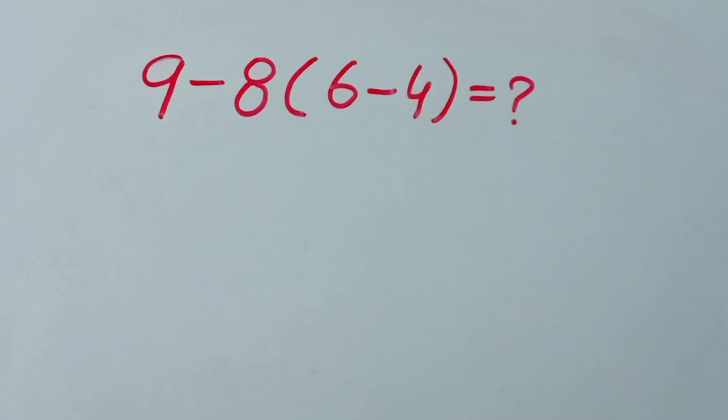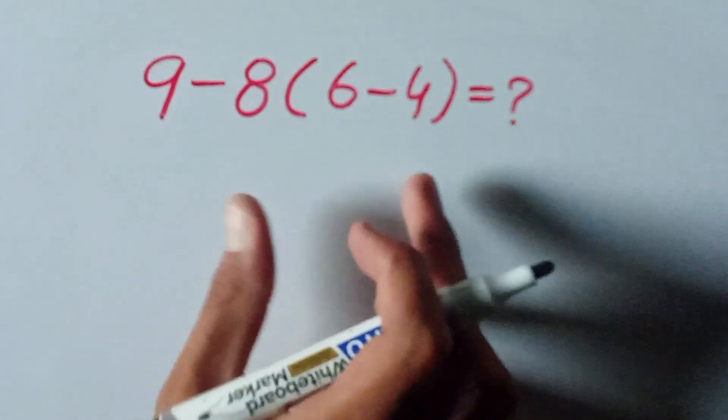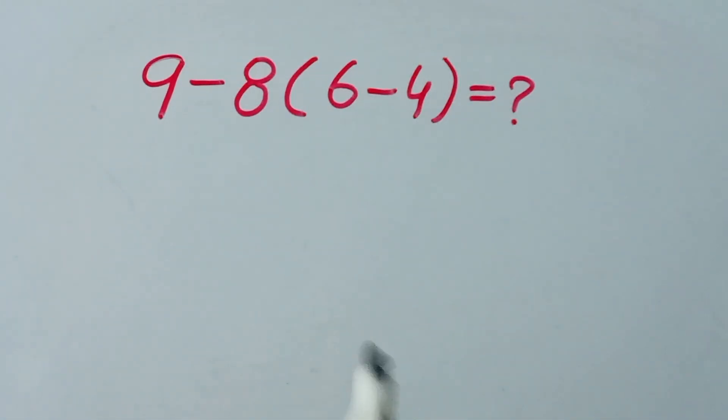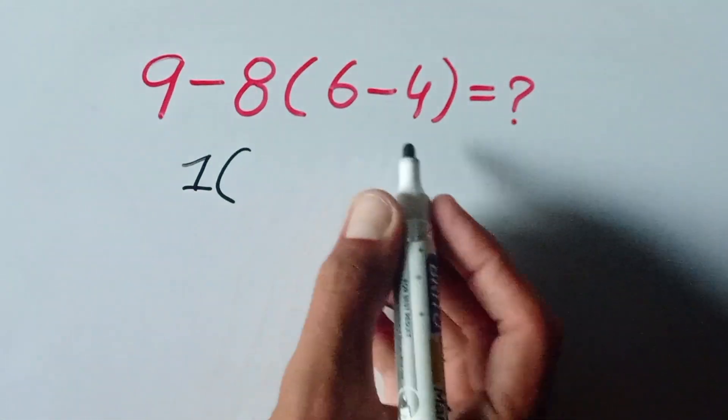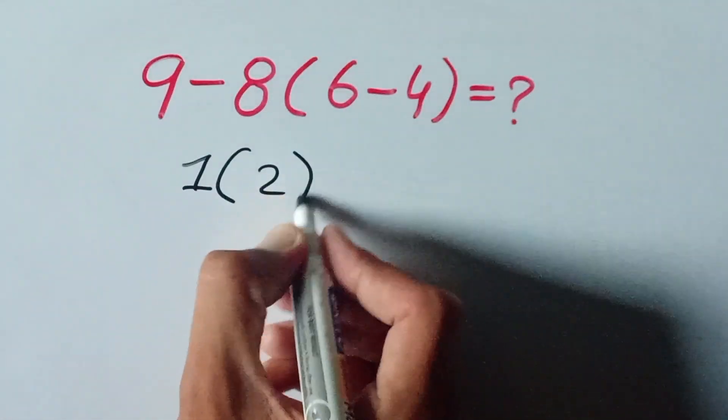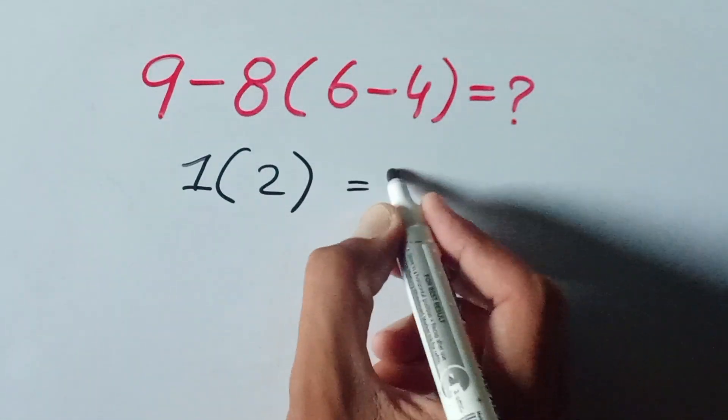So mostly people can get this question wrong. Some solve it and write it as 9 minus 8 equals 1, parenthesis 6 minus 4 equals 2, and 2 times 1 equals 2.